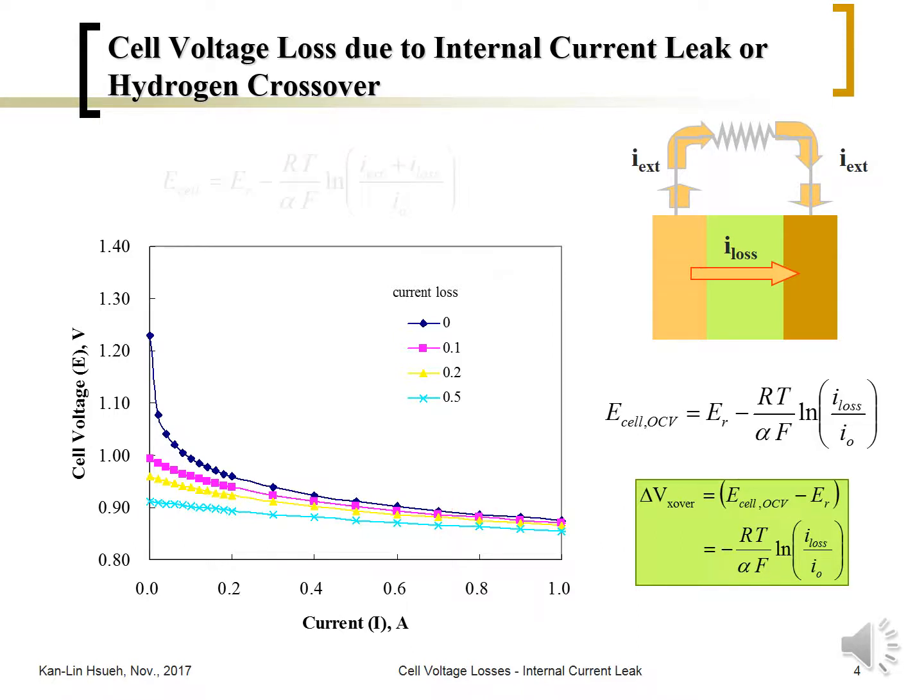But at the high current region, the influence of the internal current leak or crossover becomes insignificant. This is because, from this equation mathematically, when this one gets small, this one becomes important, but when this gets larger, then this one becomes less significant.